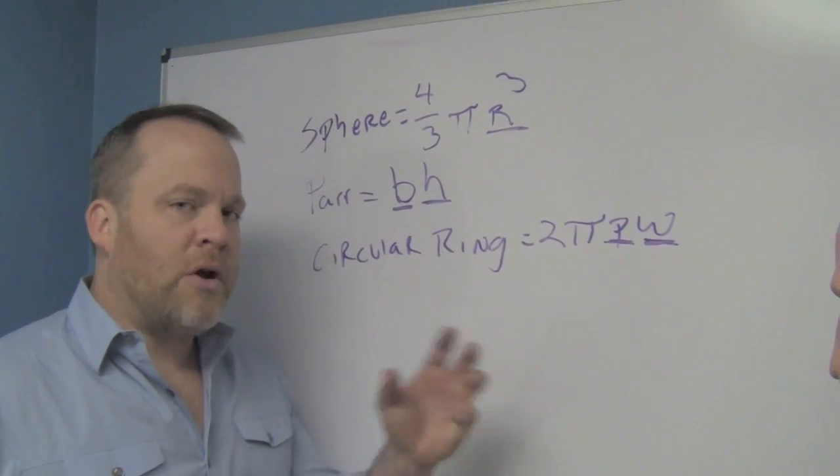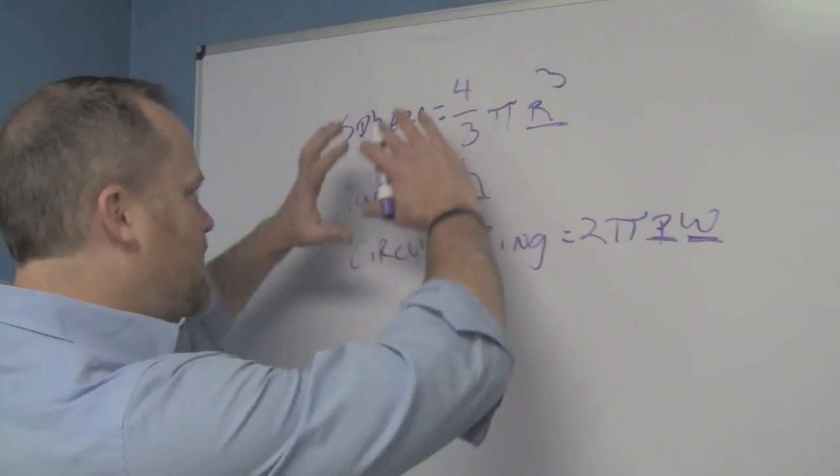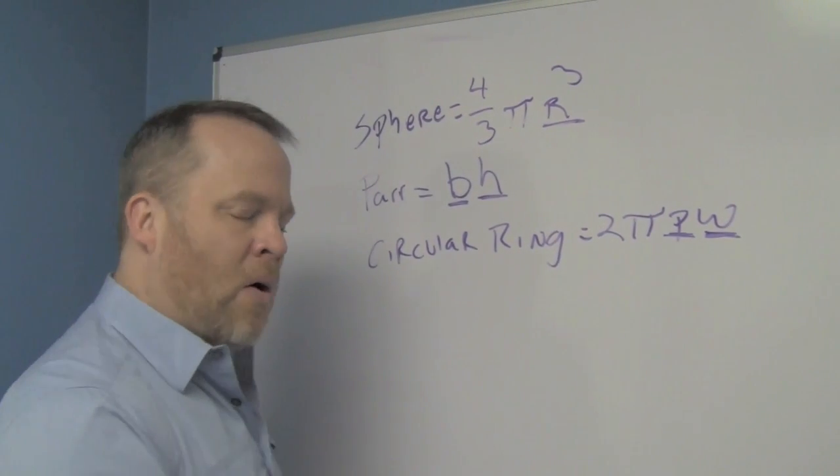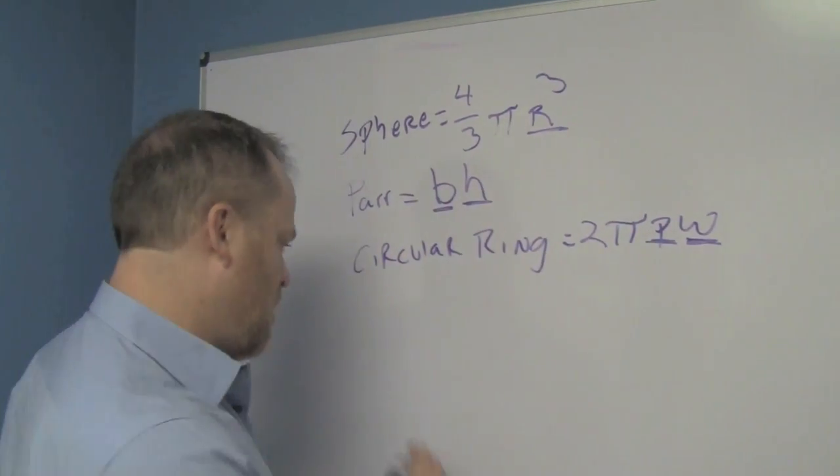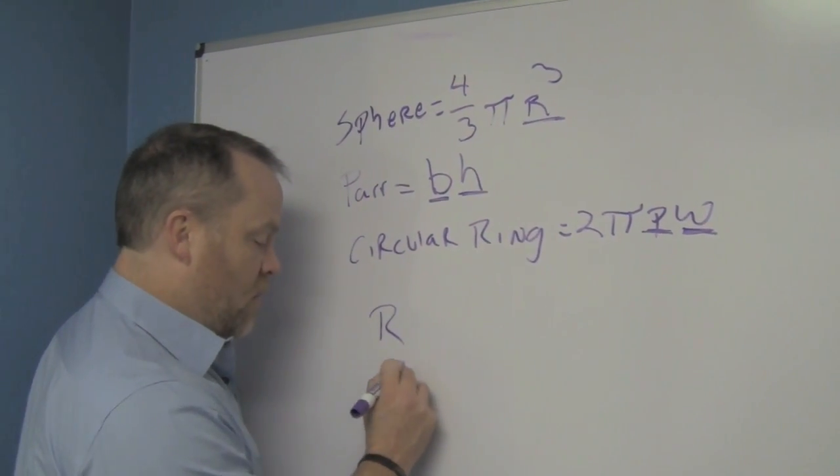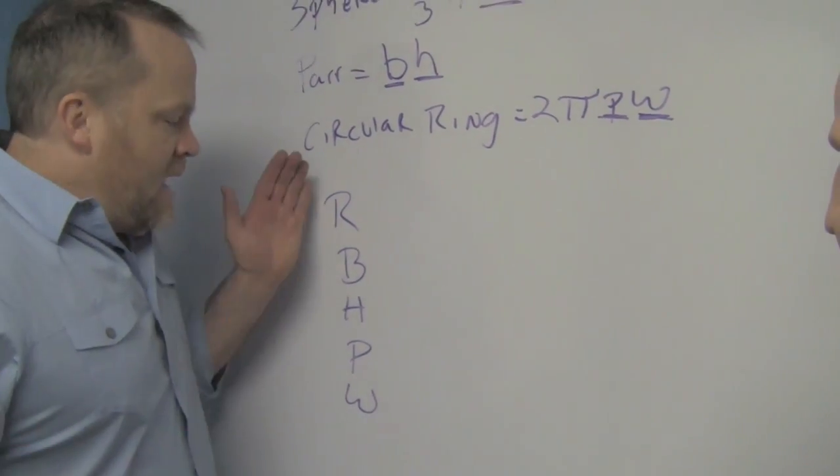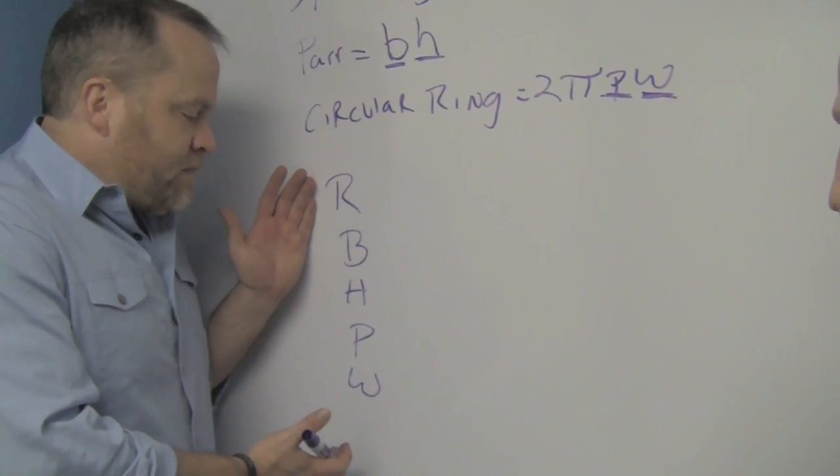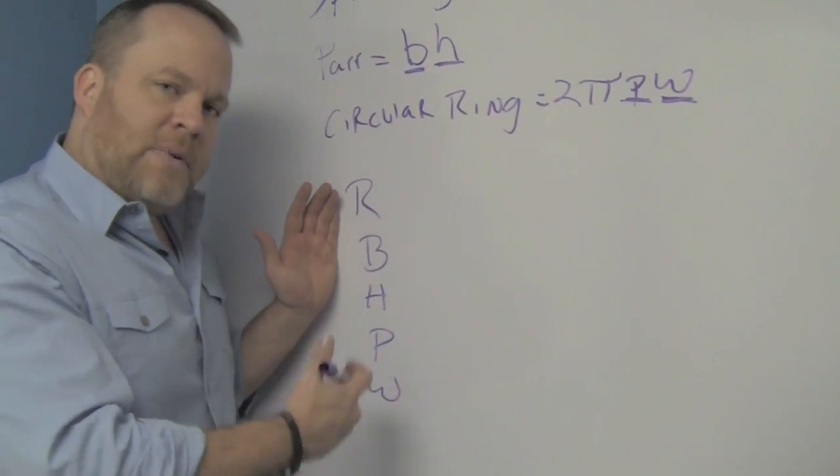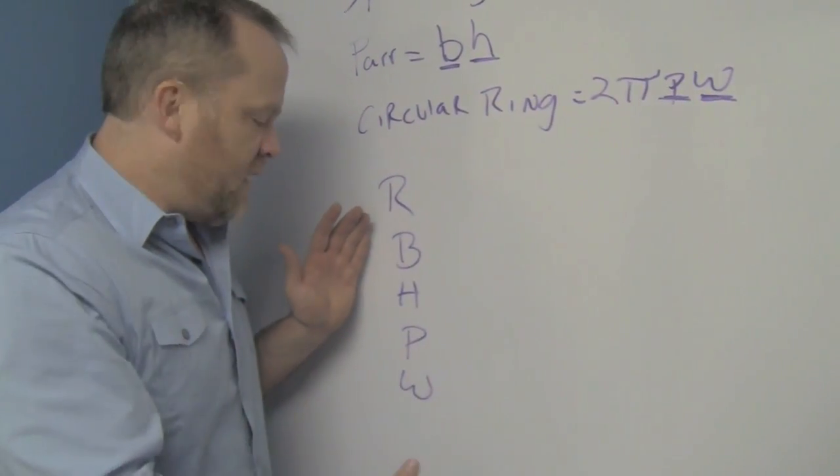The first thing you need to do when you're memorizing math formulas is take a look at all the formulas as a whole and see what the variables are. Right here we have R, we have B, we have H, we have P, and we have W. Then after you have your variables listed out like this, simply go back and create pictures for all these variables.